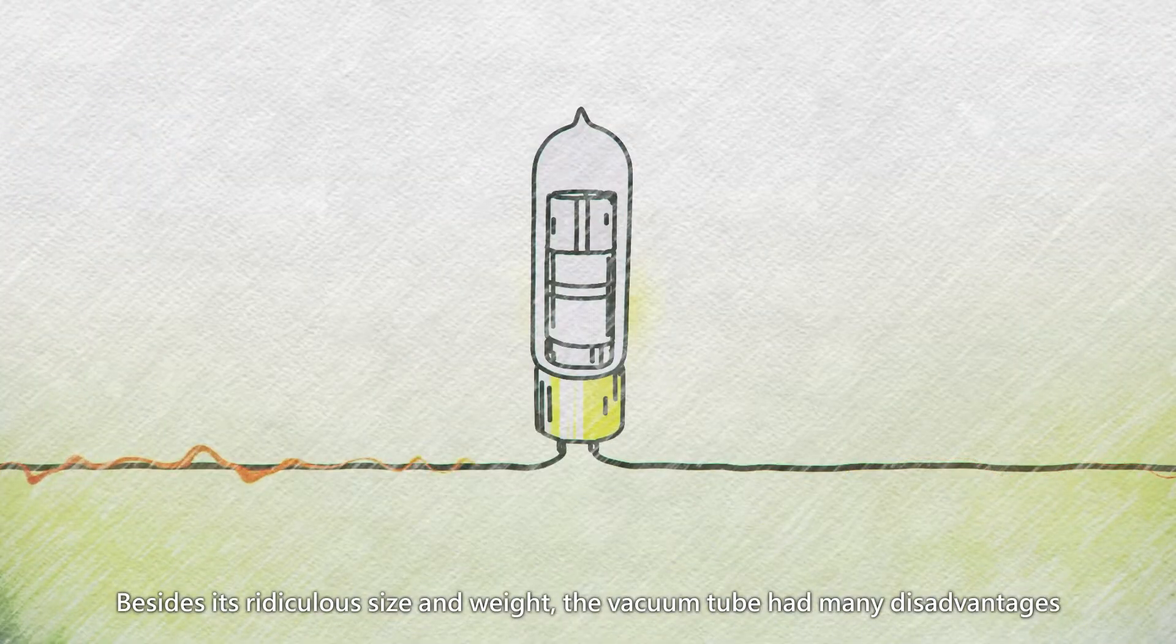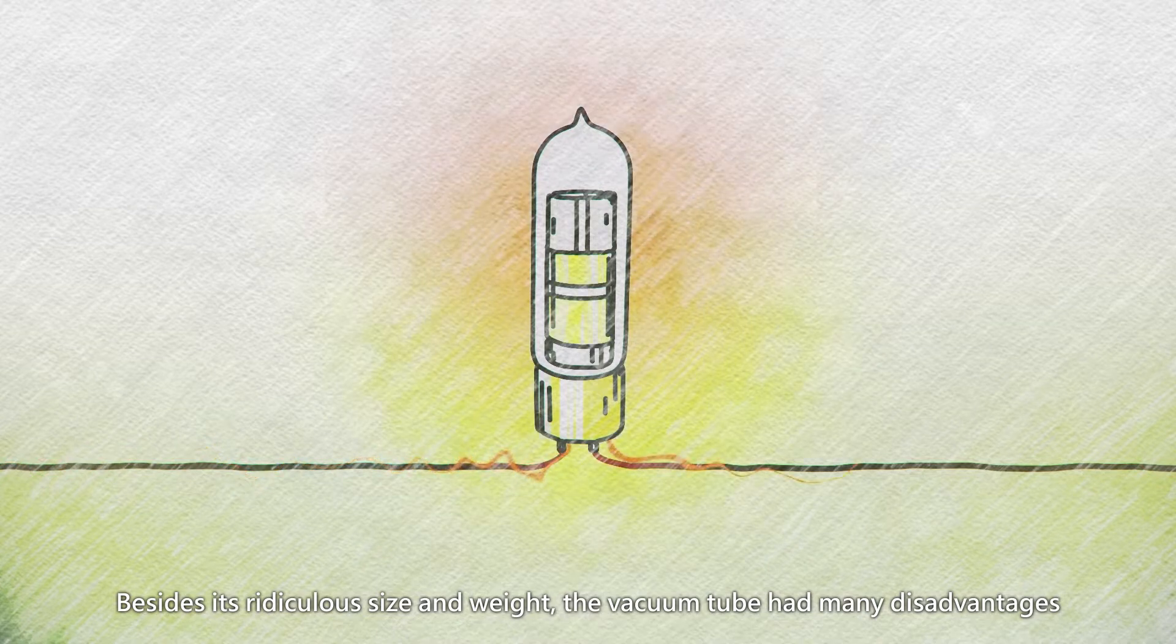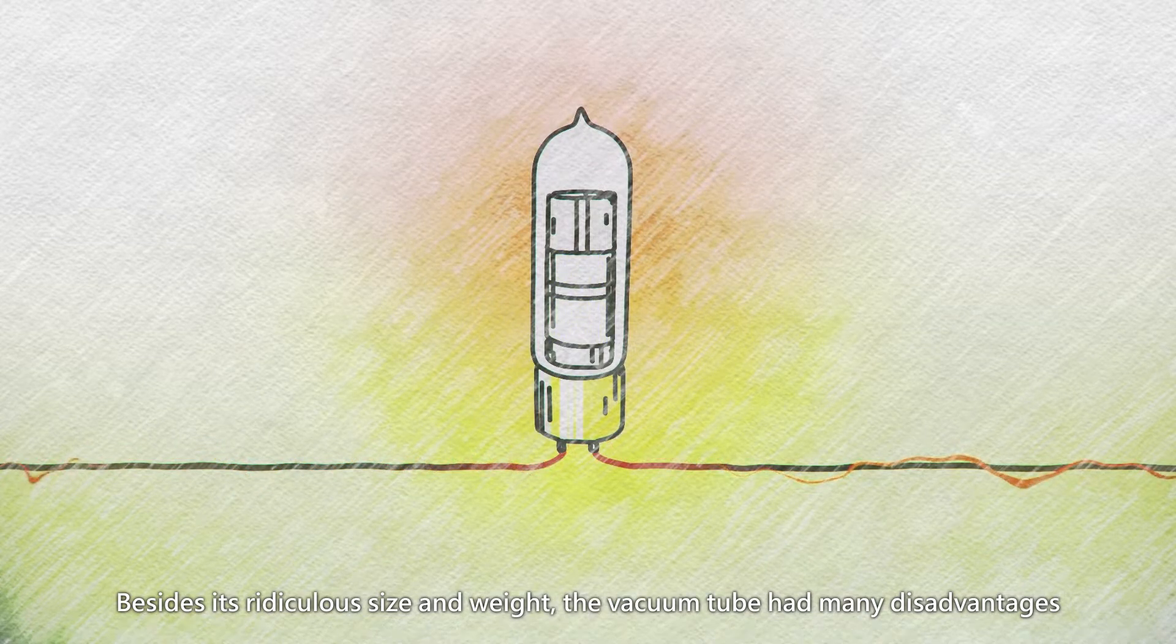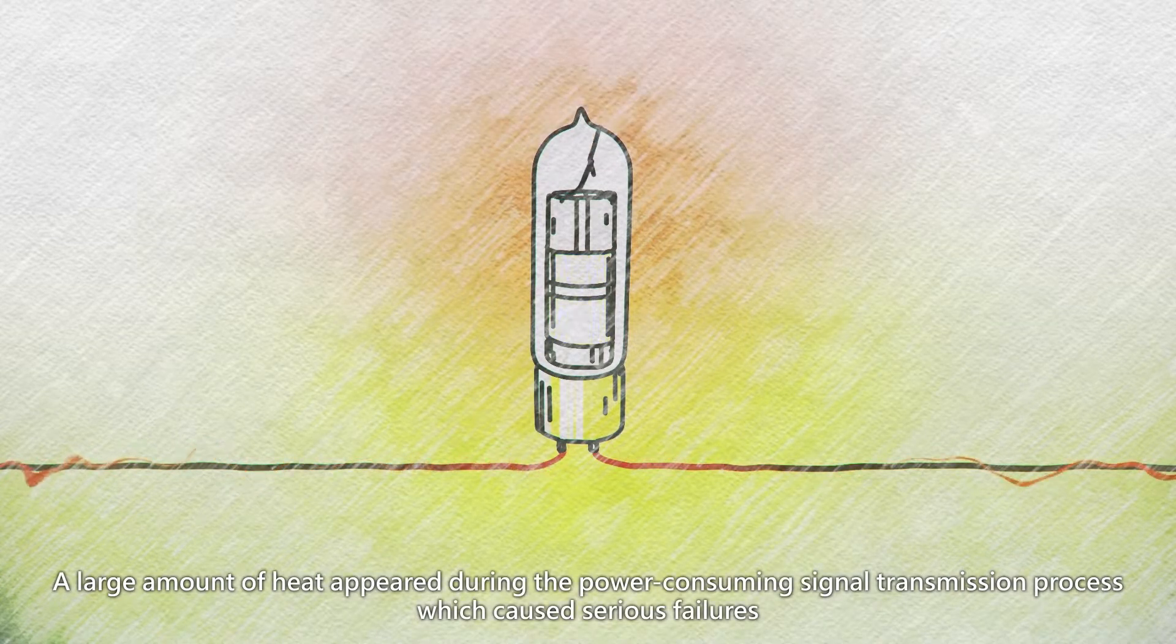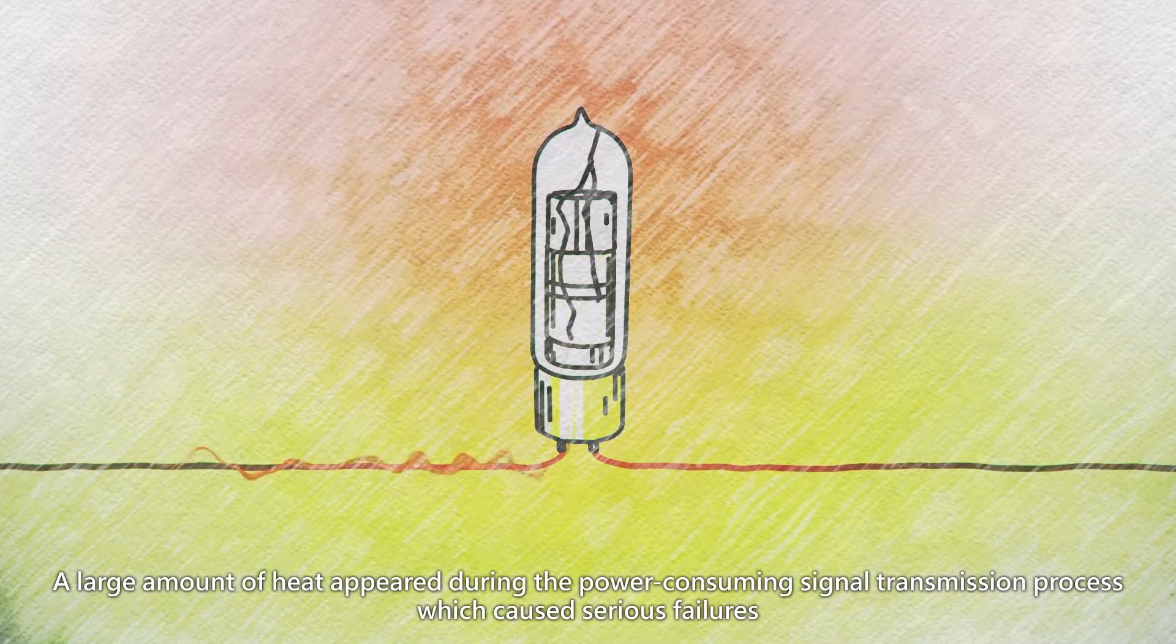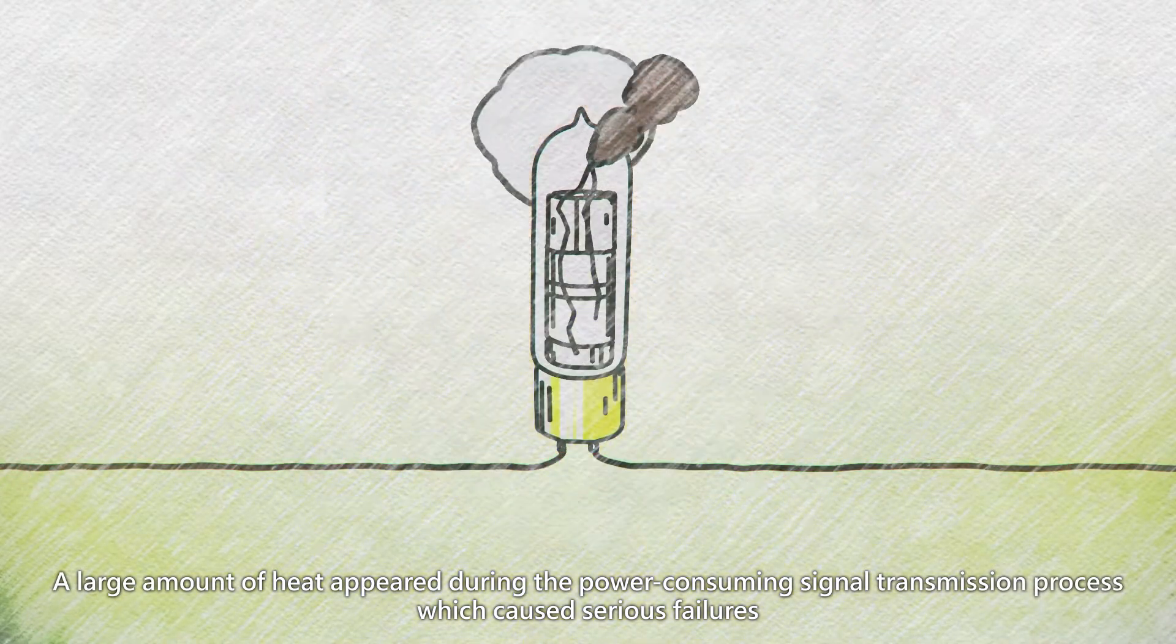Besides its ridiculous size and weight, the vacuum tube had many disadvantages. A large amount of heat appeared during the power-consuming signal transmission process, which caused serious failures.